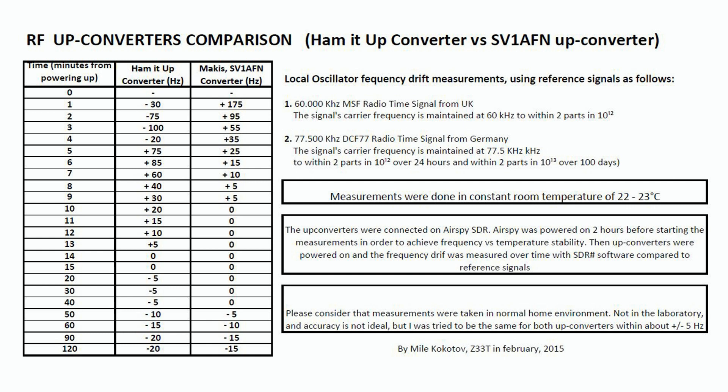In this second part of the upconverters comparison between the Hamid upconverter and SugarVector1 AFN upconverter, local oscillator frequency drift measurements were made using reference signals — the 60 kilohertz radio time signal from the United Kingdom and the 77.5 kilohertz DCF77 radio time signal from Germany.